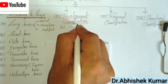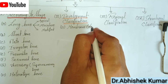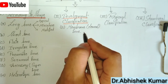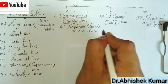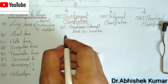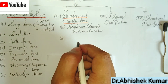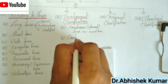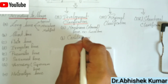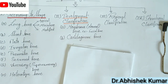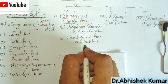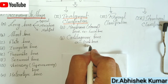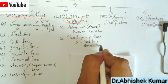Now come to the developmental classification. First, the membrane bone, also known as dermal bone, which ossifies in the membrane through intramembranous or mesenchymal ossification, and derives from mesenchymal condensation. Examples are the vault of the skull and facial bones. Next, cartilaginous bones, which ossify in the cartilage through intracartilaginous or endochondral ossification. Examples are bones of the limb, vertebral column, and thoracic cage.